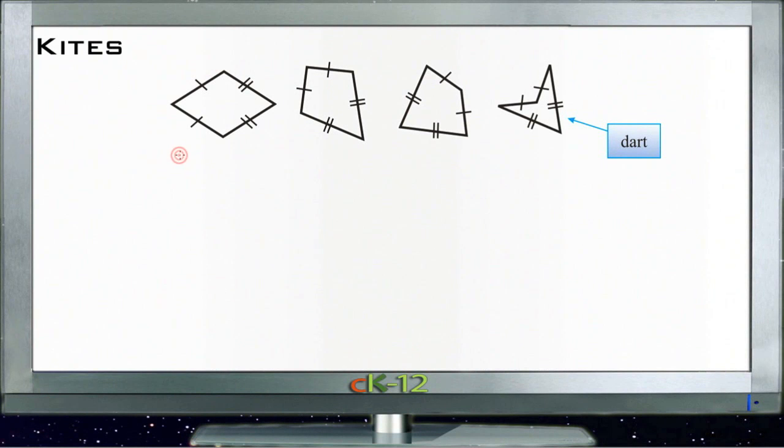All right, let's talk about kites. Kites are another classification of quadrilateral, and with a kite, specifically, there are two sets of sides that are congruent. So in other words, there's one pair of sides that are the same, and another pair of sides that are the same, but all four sides are not the same.